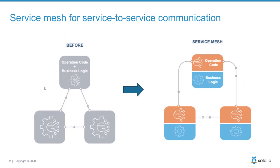With the service mesh pattern, the idea is to abstract out the application networking code — things like timeouts and retries, circuit breaking, telemetry collection, client-side load balancing, and so on. These are not unique to any one language or framework, so we model that as an interceptor for your applications. When they talk to the network, they go through this interceptor that enriches network communication and makes it more secure, observable, and resilient.